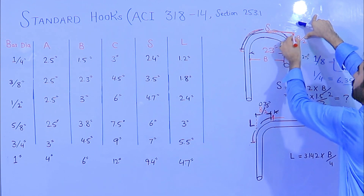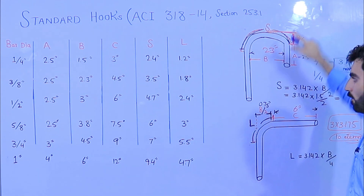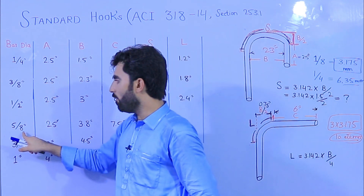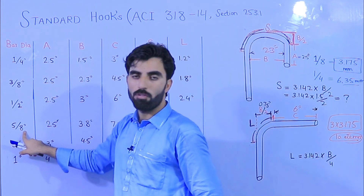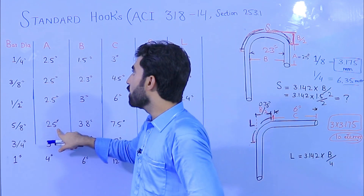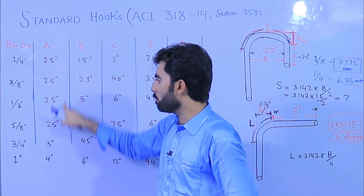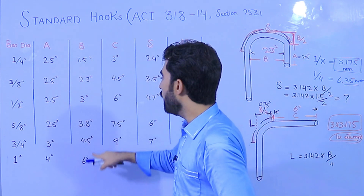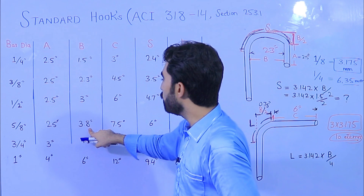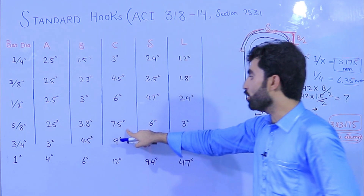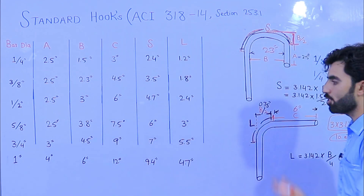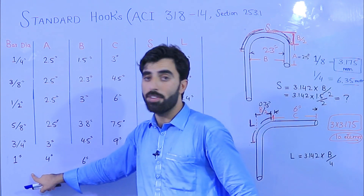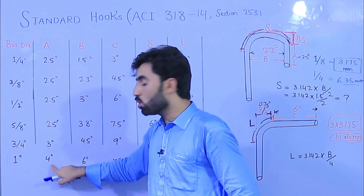For No. 5 bar: A should be 2.5 inches, B should be 3.8 inches, and C should be 7.5 inches.